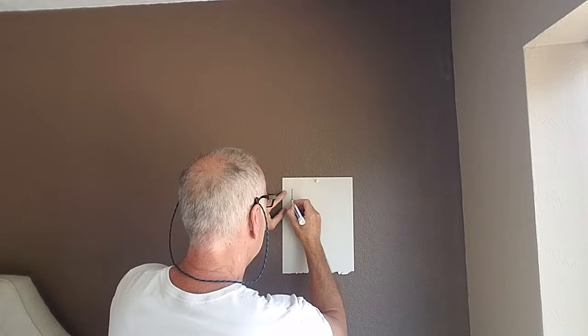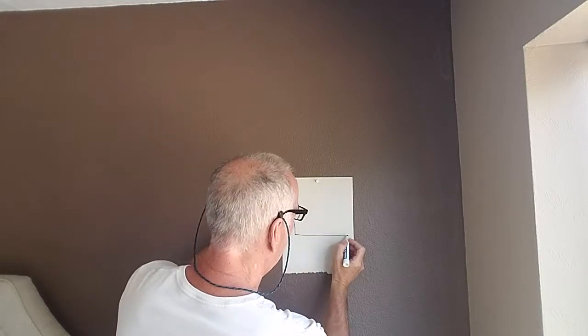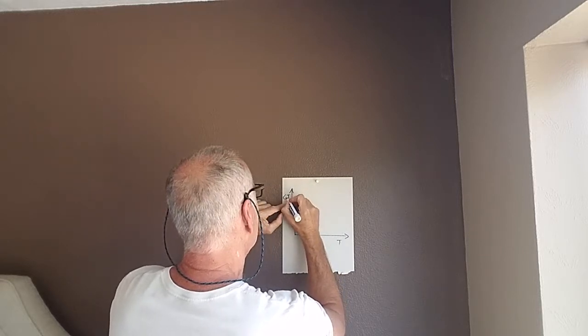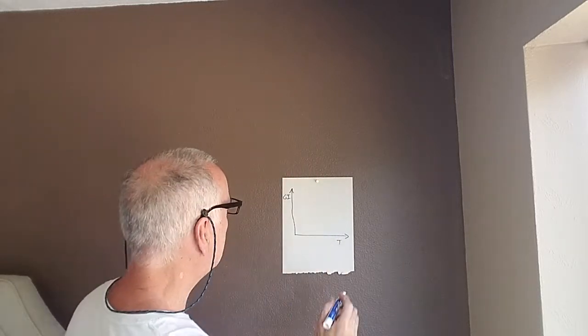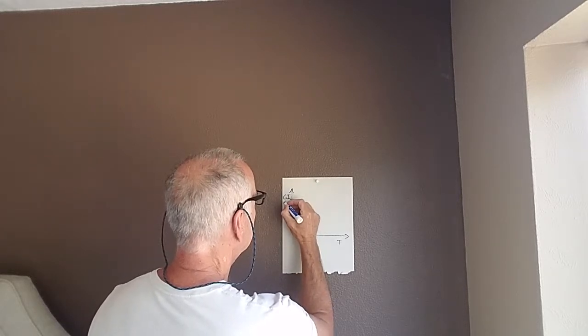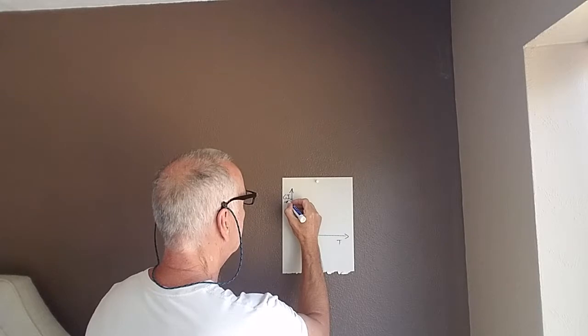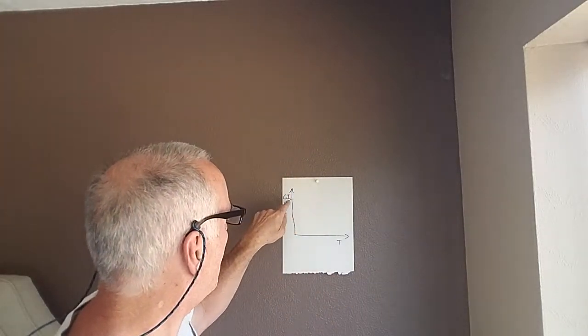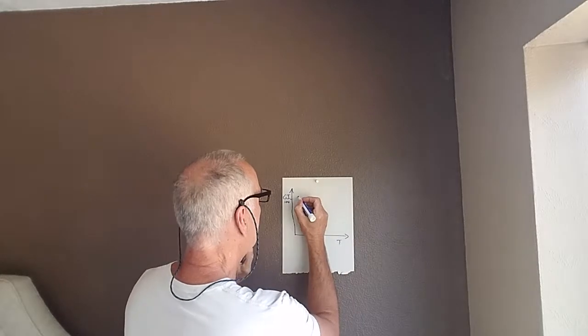Let me start on my high-tech whiteboard here and just draw a little graph to give you an idea of what we're talking about. So if I have time on the x-axis and glycemic index going up the y-axis, we'll put 100 here as the units. This is the glycemic index — you get a number for different foods based on how your blood glucose will respond. 100 is for pure glucose.